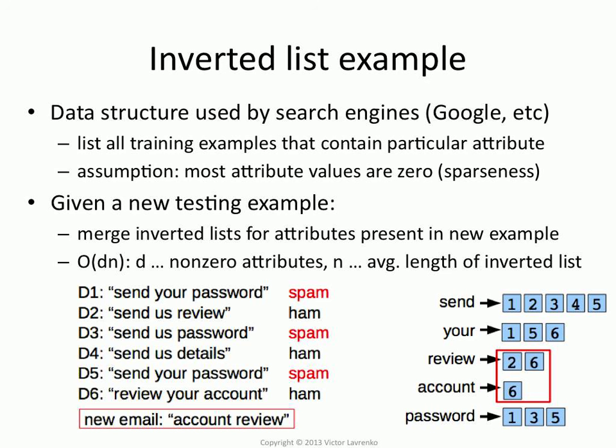That allows you to very quickly narrow down a set of instances to compare to. The reason this works for text is the attributes are very sparse — most words occur in very, very few documents, in very few instances. So when you merge these lists, you end up with a set much smaller than your entire training dataset. If you had non-sparse data and tried to use inverted indices with real values, that would be slower than brute force comparisons.